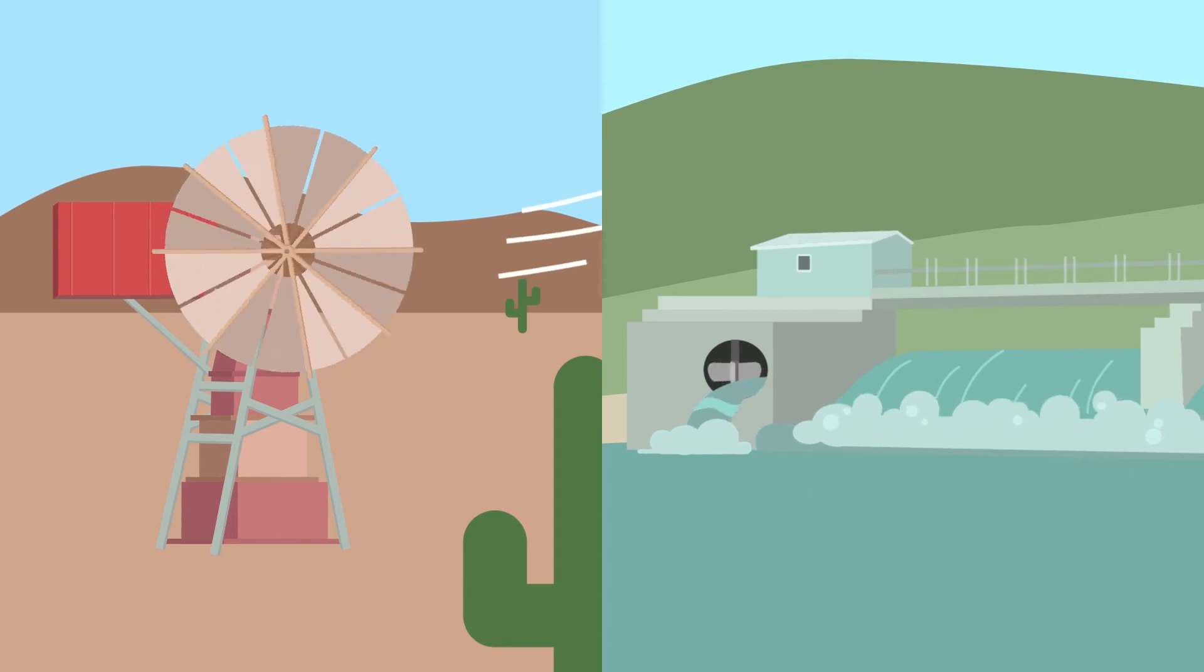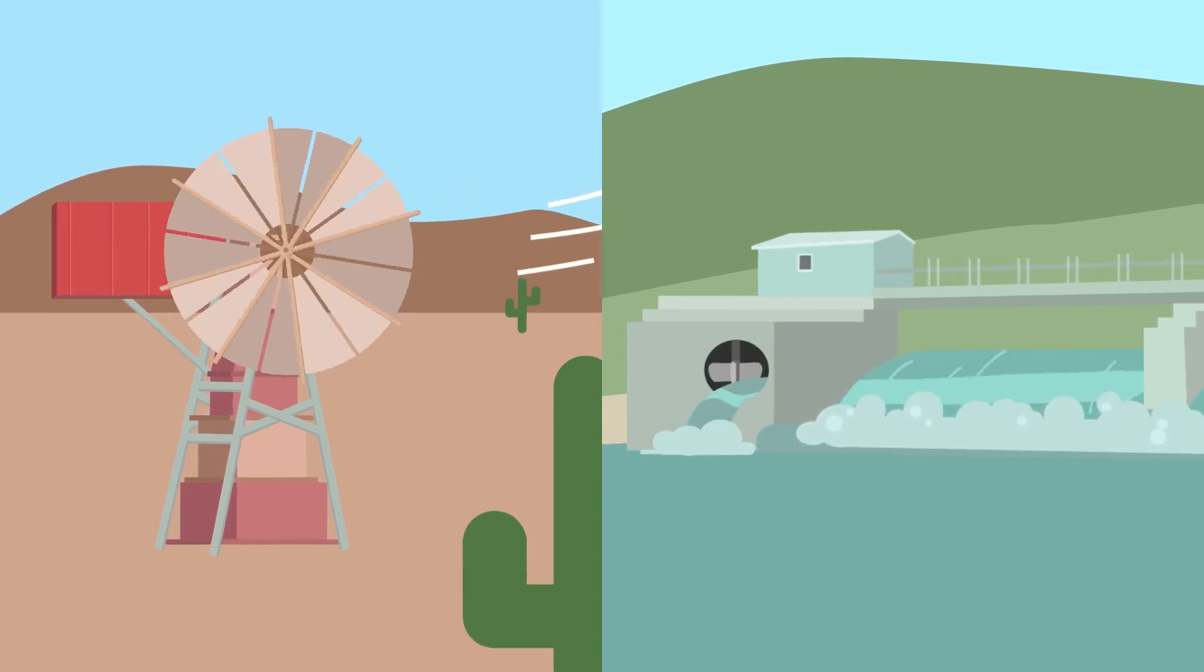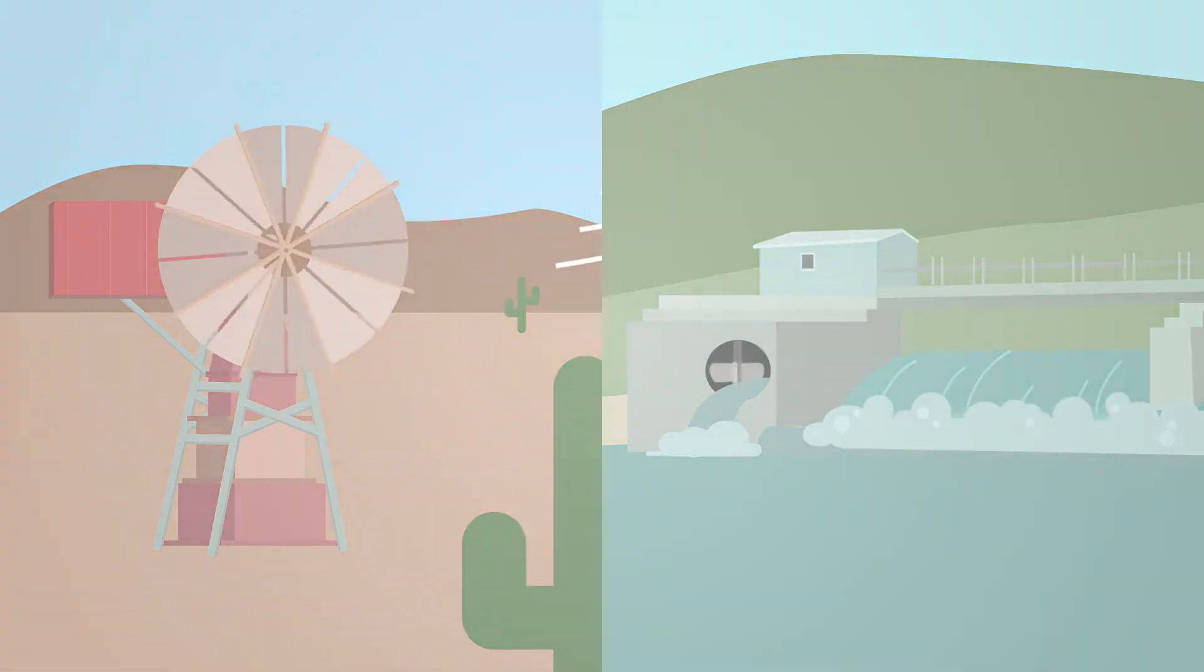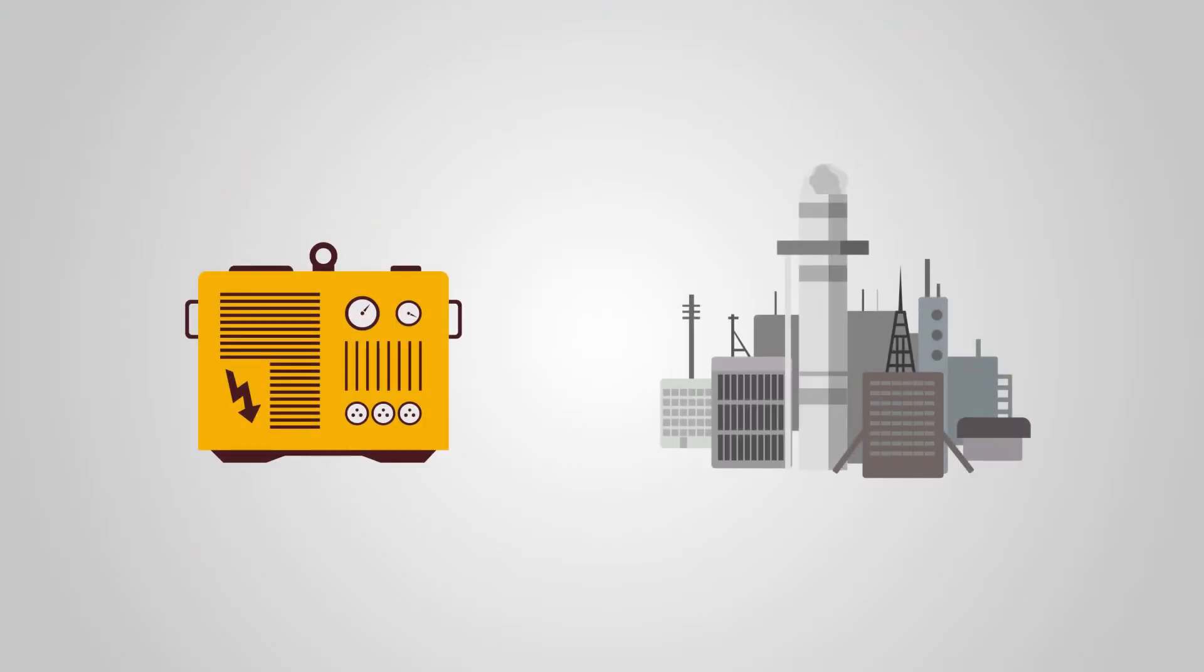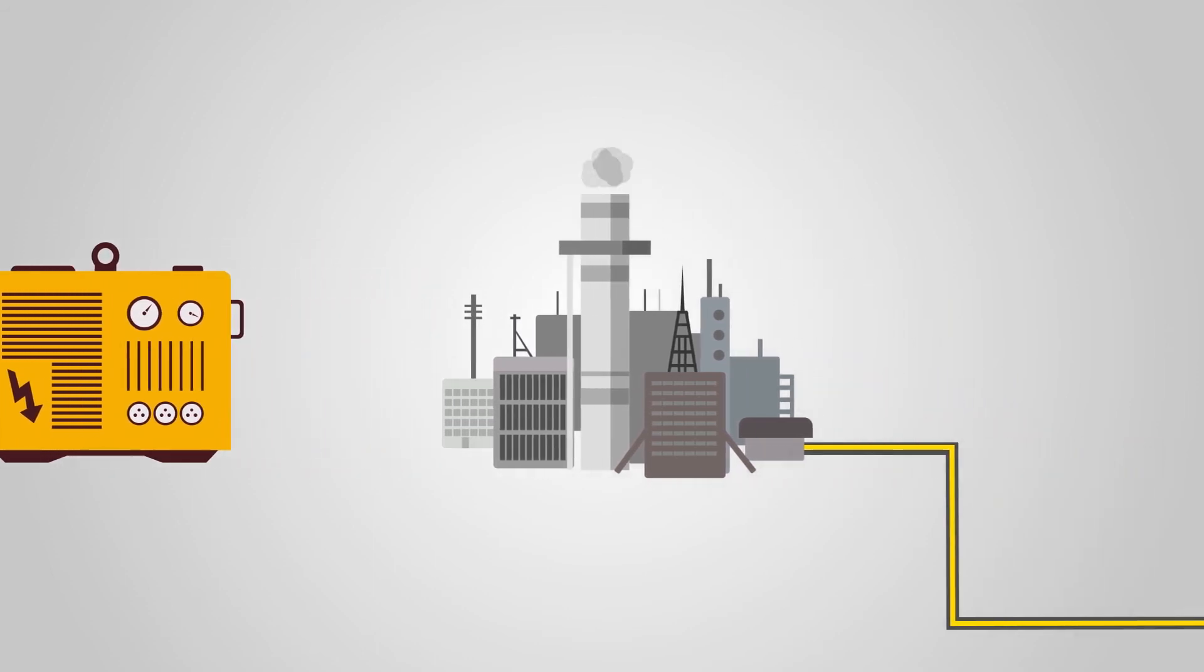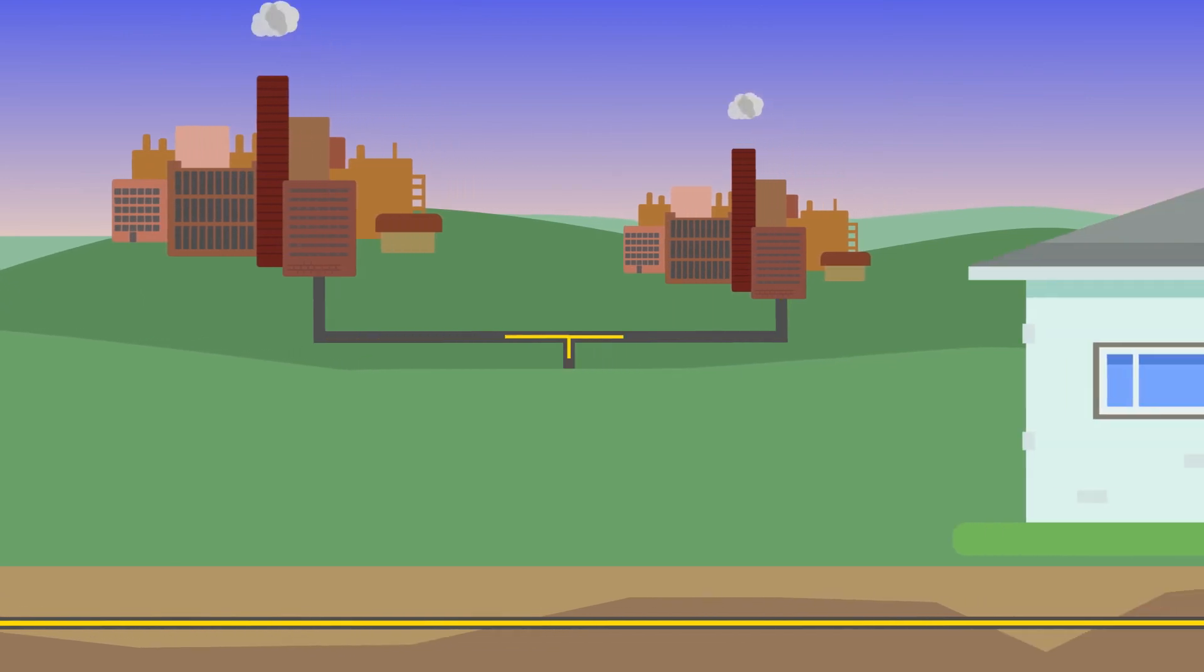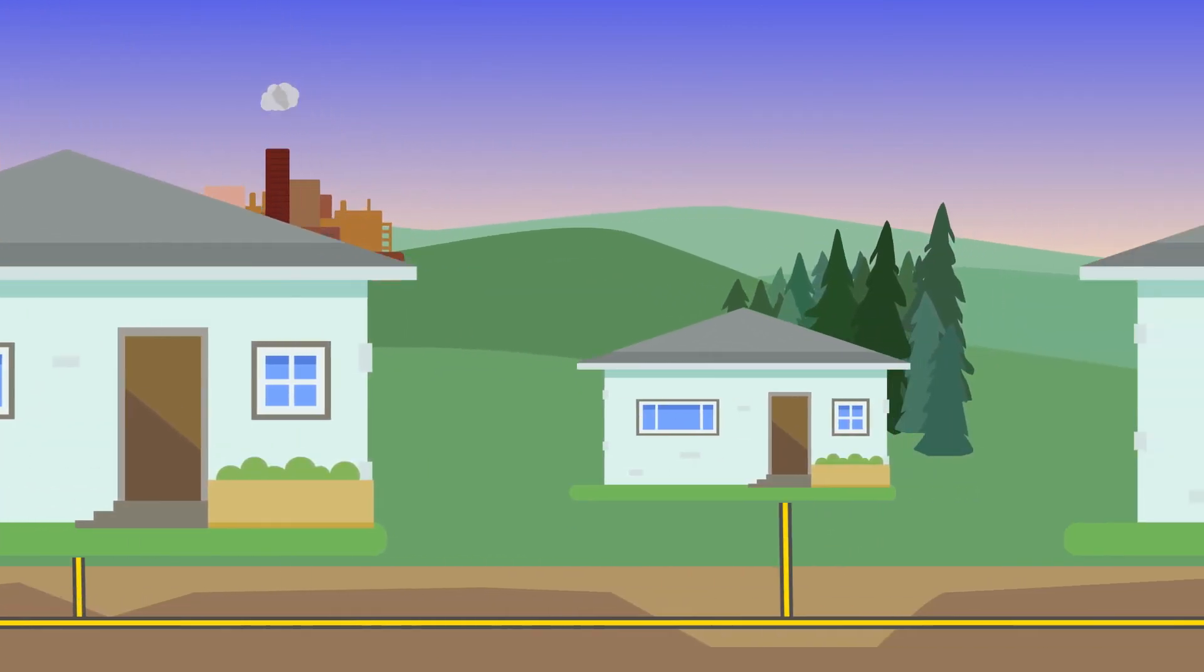Many generators harness kinetic energy from a variety of sources to keep magnets spinning. As more uses for electricity were discovered, generators became more common. Wires reached farther and farther, pushing electrons into factories and homes, forever changing the way we live.